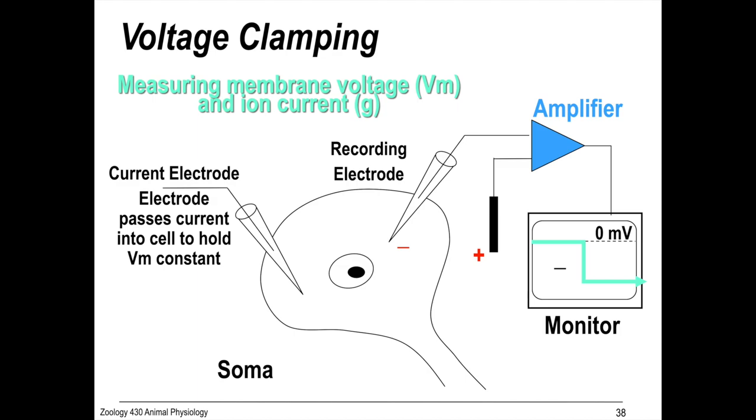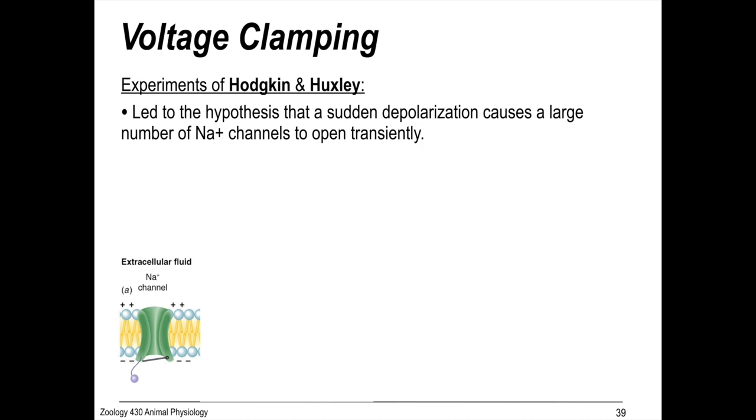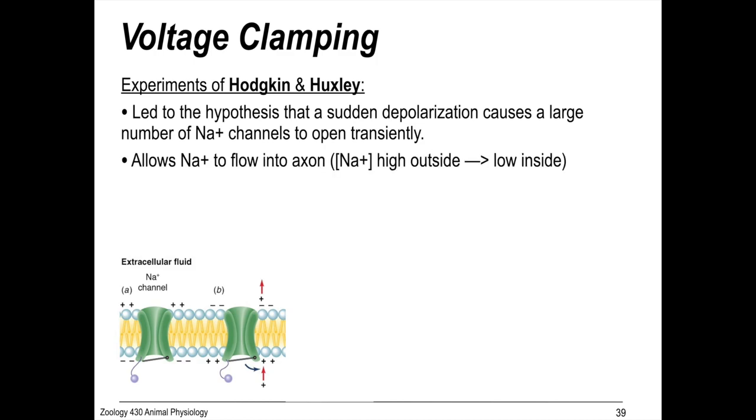It was brilliant. These early voltage clamping experiments led to the hypothesis that a sudden depolarization is what was causing a large number of sodium ion channels to open transiently. Okay, so here we have the depolarization. It flips polarity on the membrane, causing these membrane channels to open.